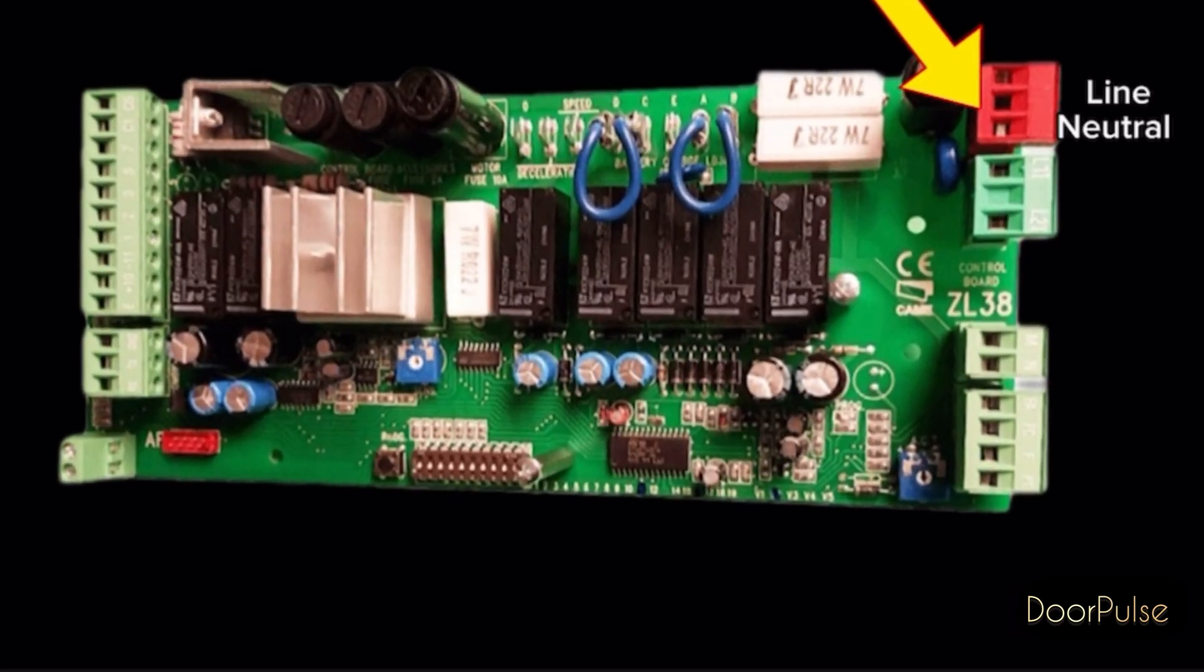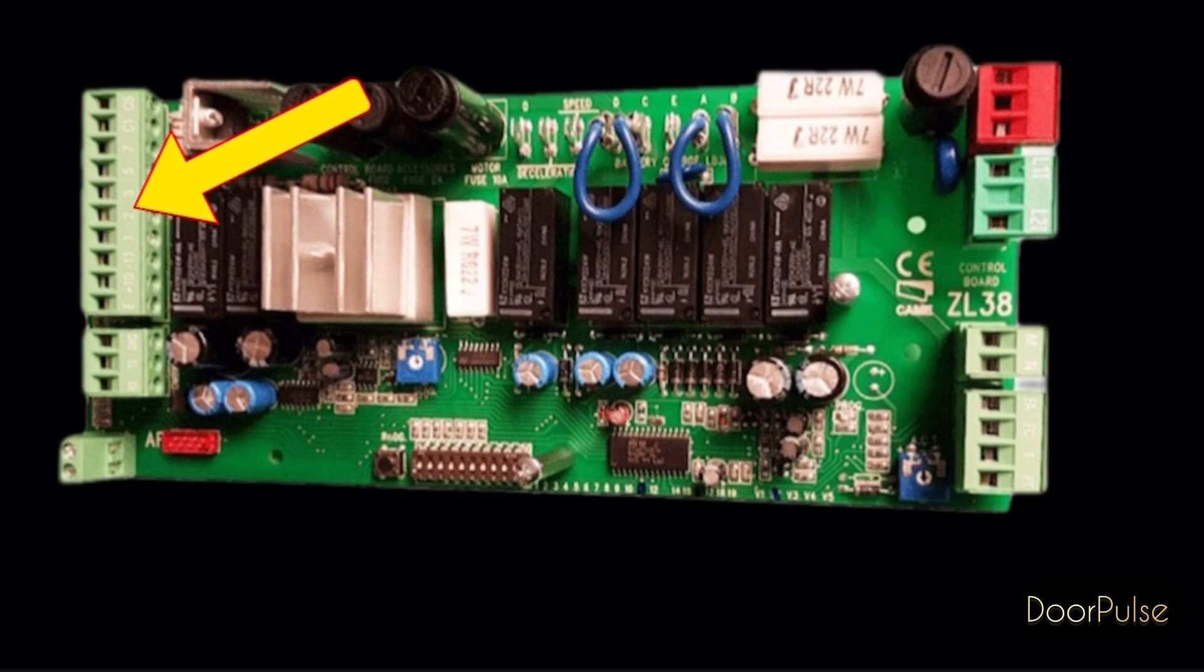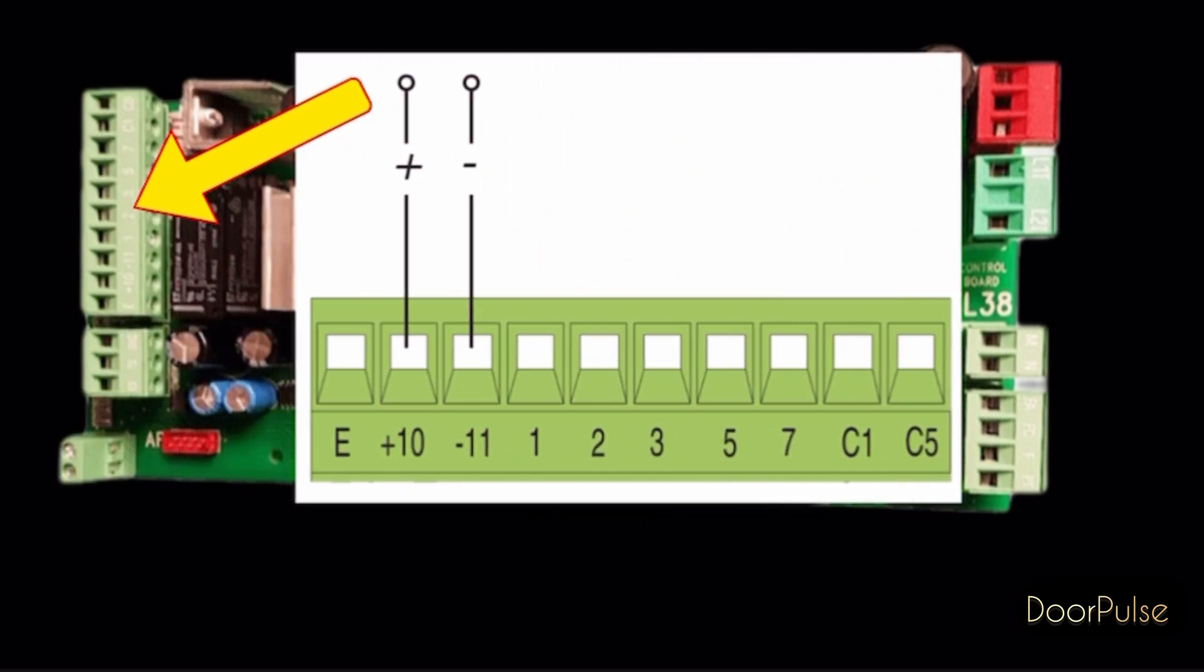This 2-pin connector, line and neutral for power supply to working control board. The output to power supply 24V AC for accessories, normally 40W maximum. Pin 10 and pin 11 is output 24V for accessories.